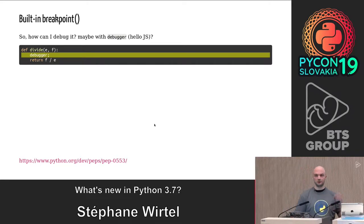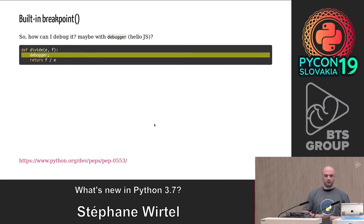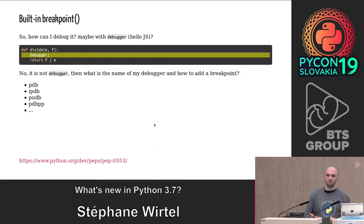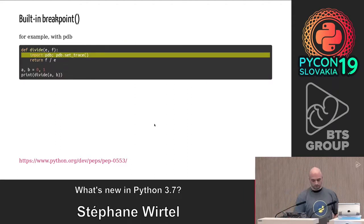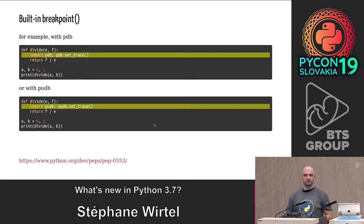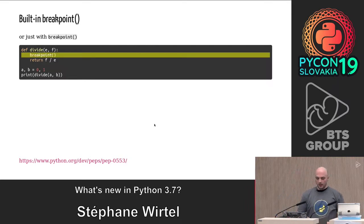We have a debugger keyword — just a joke, that's from JavaScript. For us there was another solution: we have pdb, ipdb, pdbpp, web-pdb, etc., and of course PyCharm, Spyder, vim — as you like. Who uses pdb? It's an anchored interface. Of course we don't always know which debugger we can use.